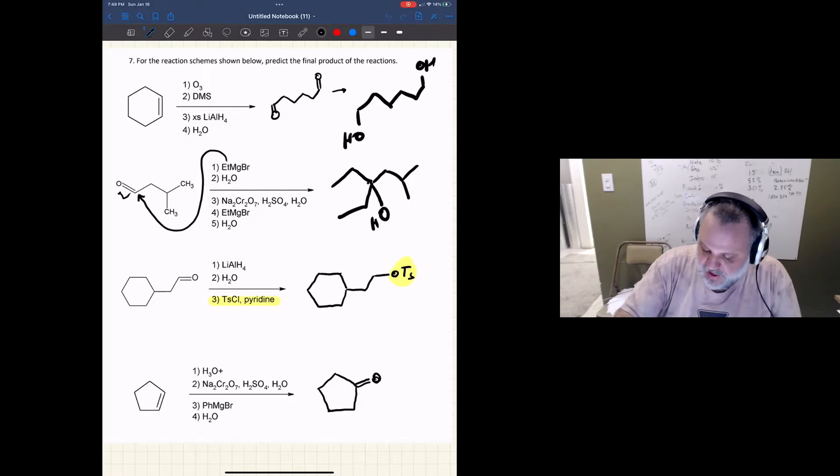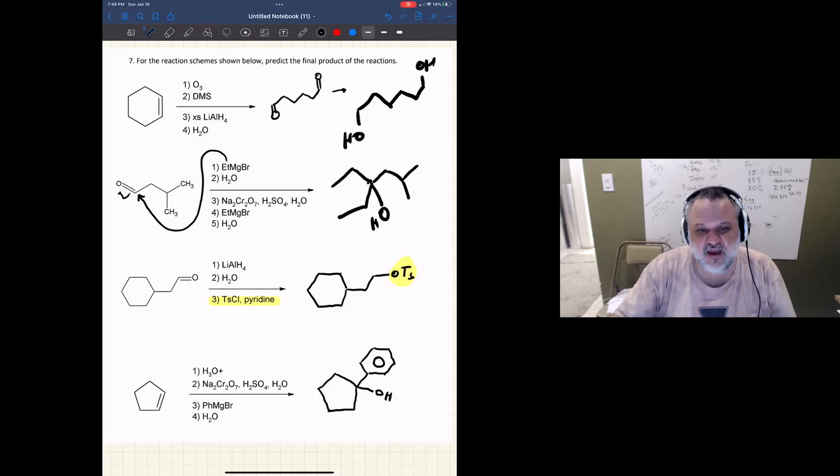Then I'm going to react that carbonyl group with a Grignard reagent. It's a benzene ring Grignard reagent, which is certainly possible, so I'm going to add a benzene ring at that location and turn that carbonyl group into an alcohol. All right, and that's how we do this.